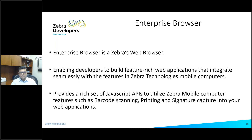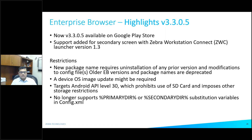Moving on to Enterprise Browser — most of you know what it is. You can write HTML apps and run them on our devices, making use of features available on Zebra devices through JavaScript APIs. You can use them to access scanning, printing, or signature capture in your applications. It's a very popular tool for those interested in web apps. Among recent updates, we have released Enterprise Browser on the Play Store and added support for running Enterprise Browser in Zebra Workstation Connect (ZWC).